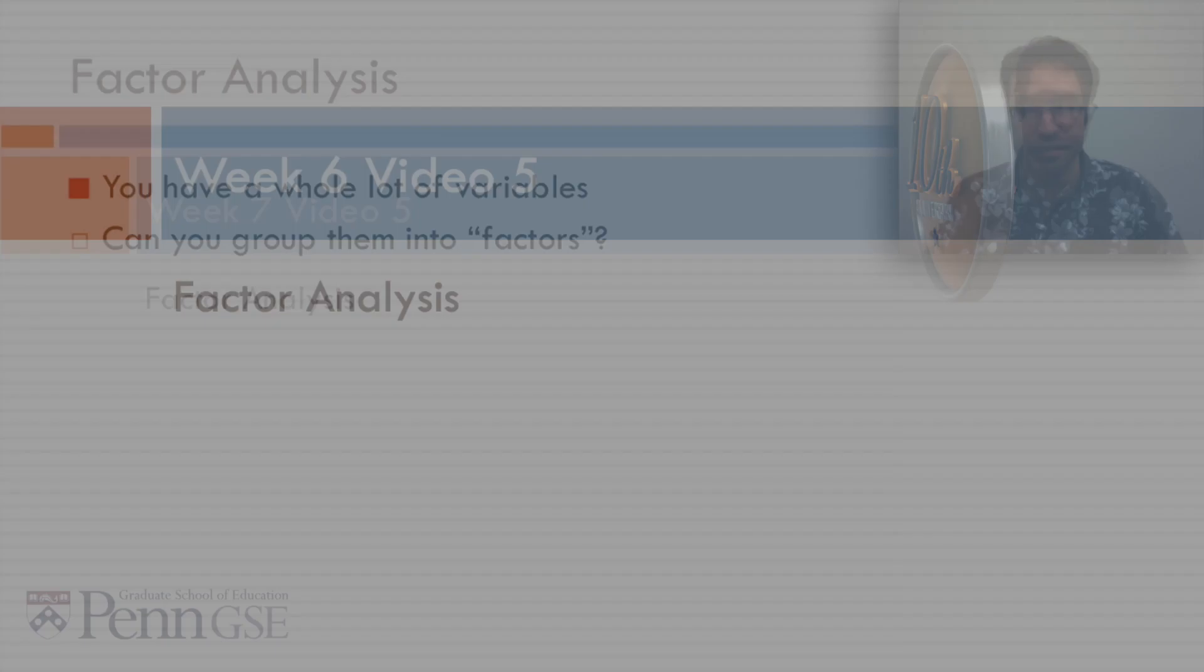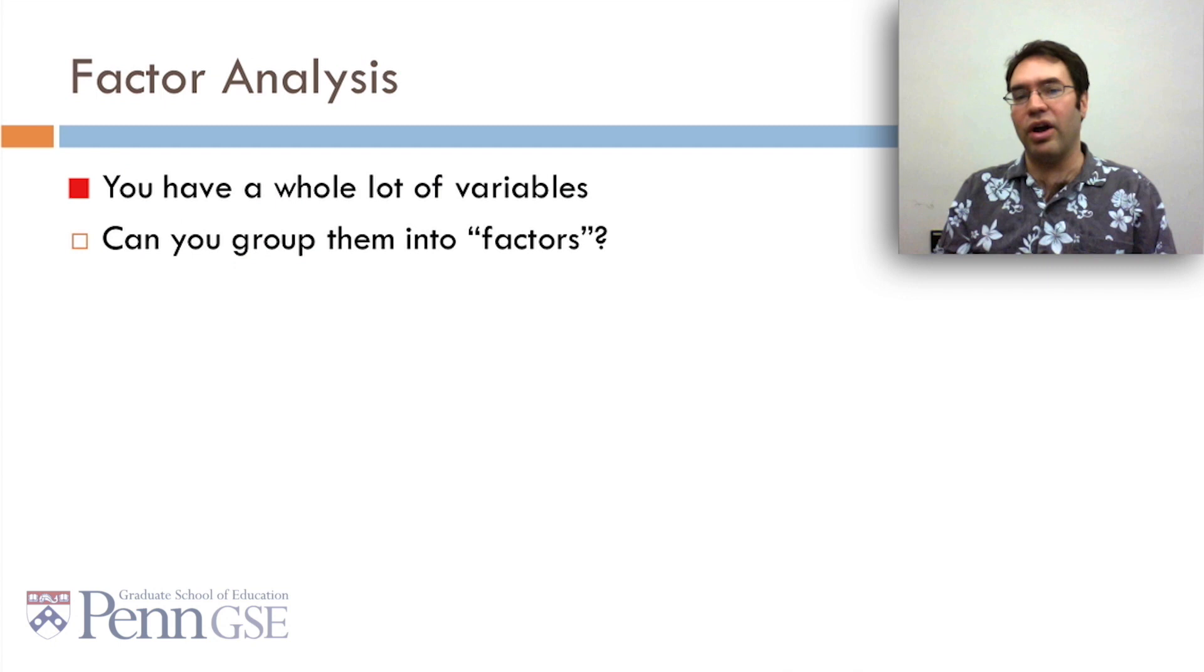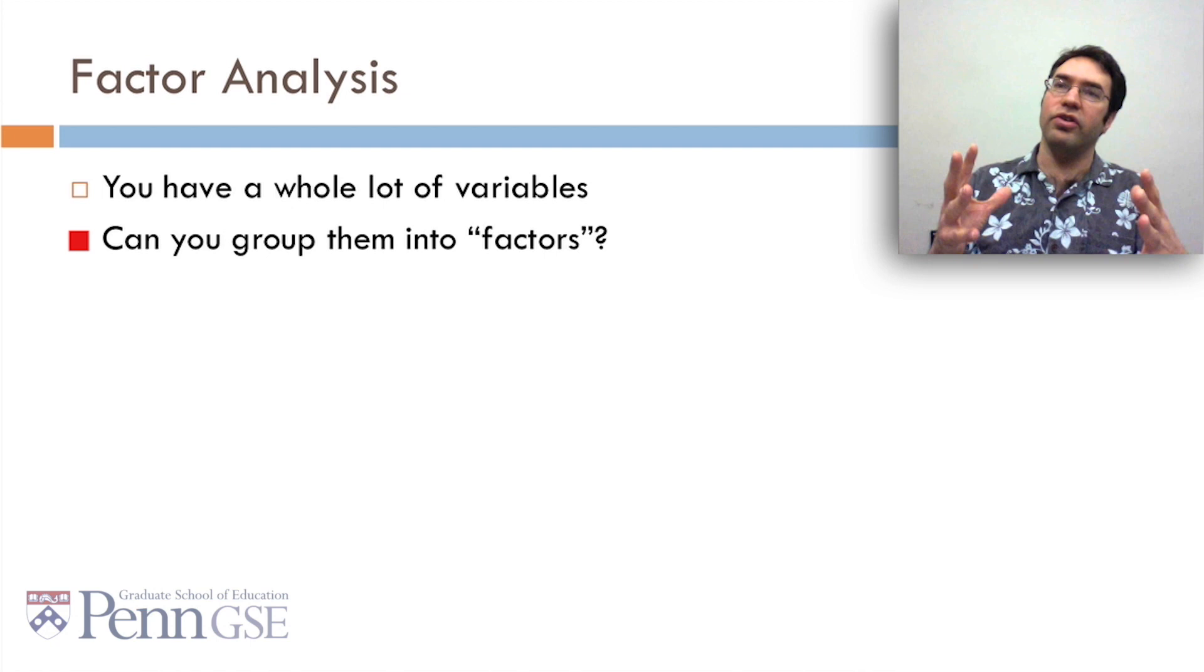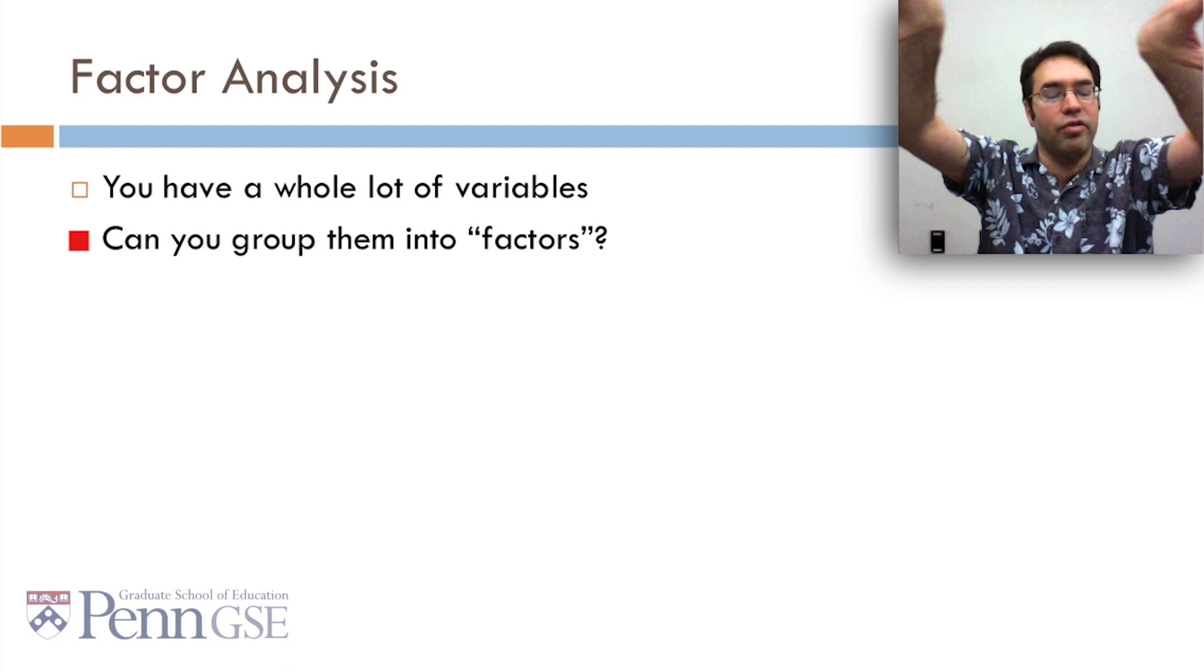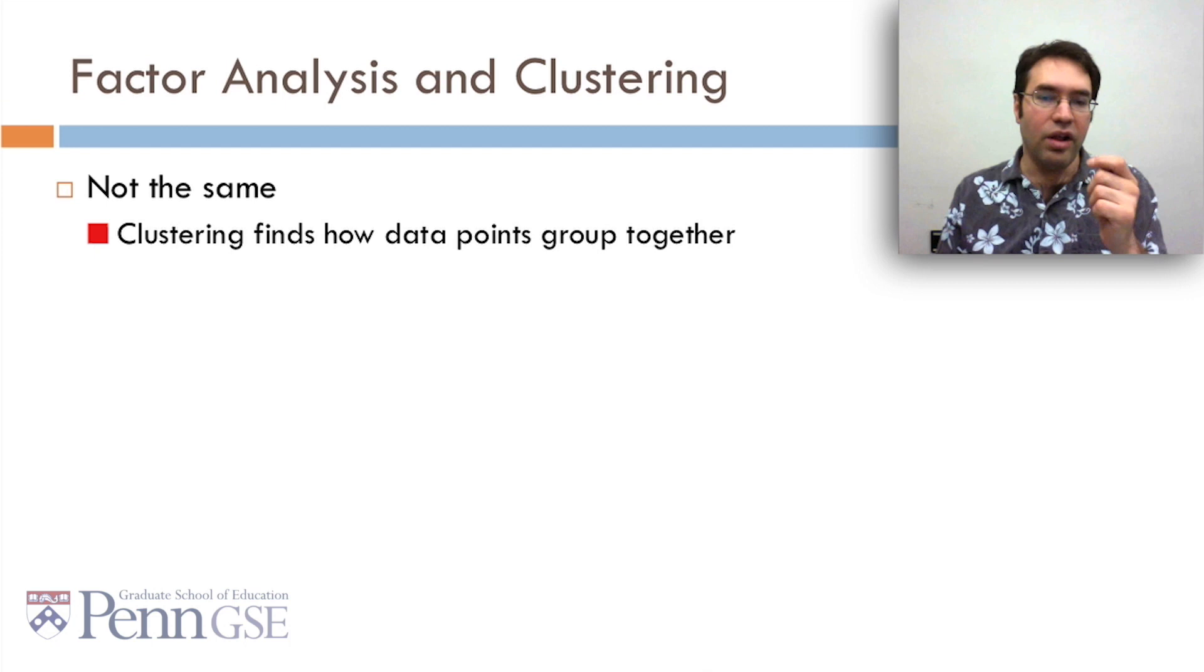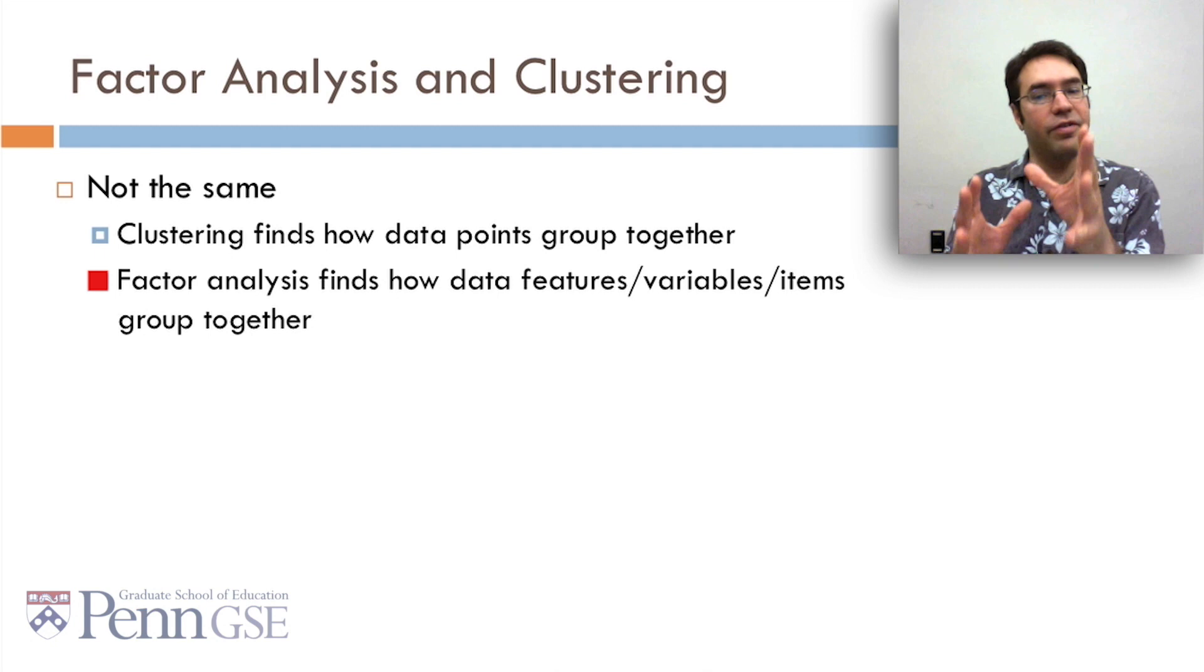In factor analysis you have a whole lot of variables, a hundred, a thousand, a million, and you want to group them into factors which are variables that express the center of several variables. Now factor analysis and clustering are not the same. Clustering finds how data points group together, and factor analysis finds how data features, variables, or items group together. So they're similar but orthogonal. In many cases you can transform one problem into the other, but conceptually they're still not the same thing.